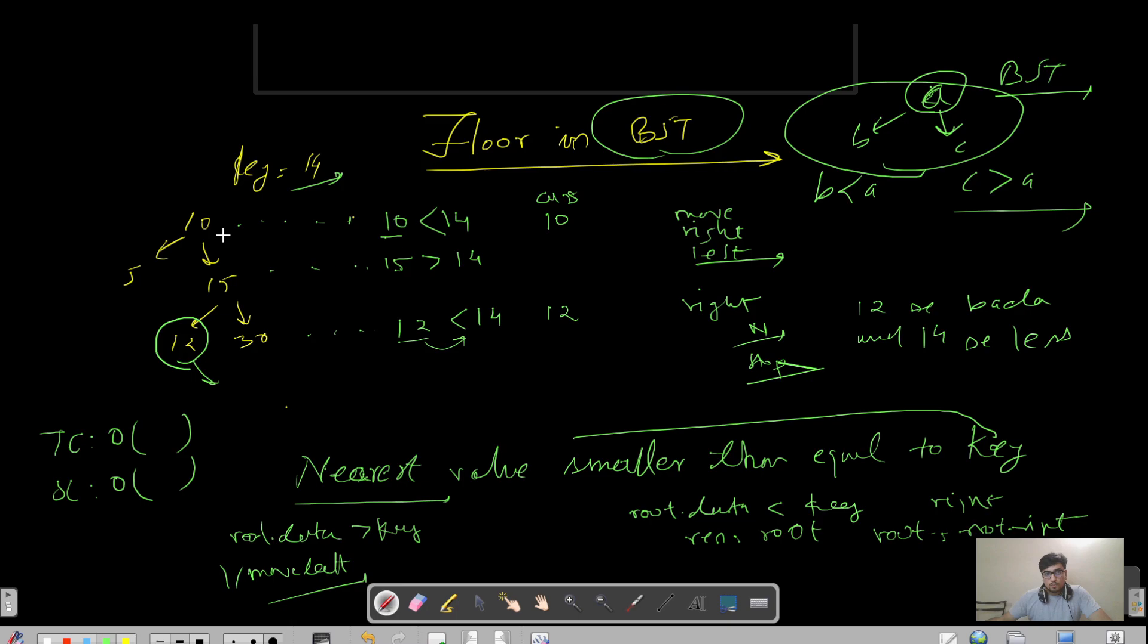And the space complexity, we are not using any additional data structure, just using some variables like the answer and direction variables. So that means O(1). Let us see the code and we will proceed ahead.